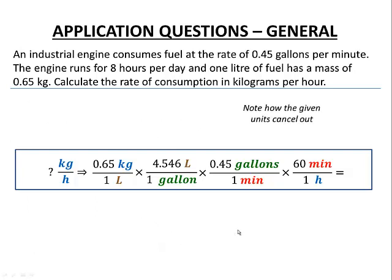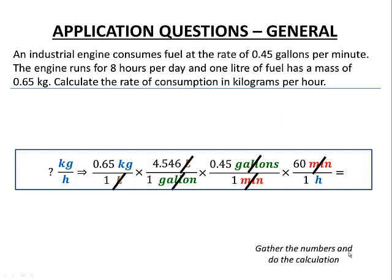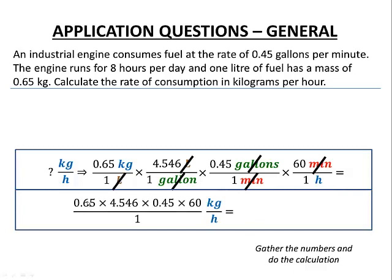Doing our dimensional analysis: liters cancel, gallons cancel, minutes cancel — leaving kilograms per hour, just as we wanted. Gathering the numbers: 0.65 times 4.546 times 0.45 in the numerator, and 60 in the denominator, all over one. The calculation gives a rate of 79.78 kilograms per hour to two decimal places.